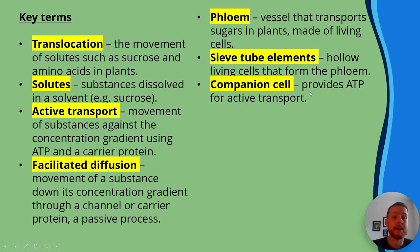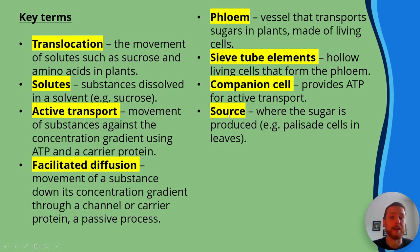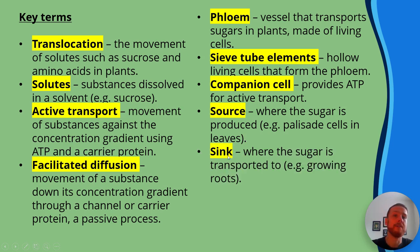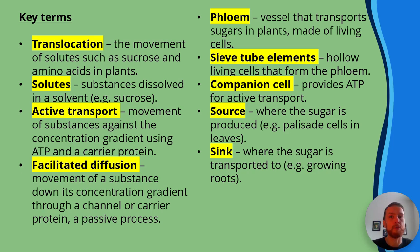Companion cells provide ATP for active transport. The source is where the sugar is produced — typically the photosynthesizing palisade cells in the leaves. The sink is where the sugar is transported to, so that could be respiring tissues like roots, or a store of polysaccharides like a tuber — for example, a potato or a carrot.